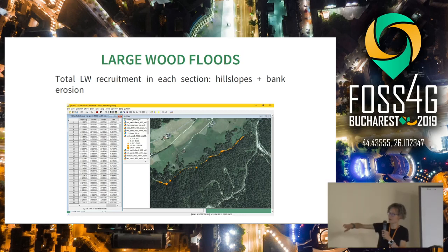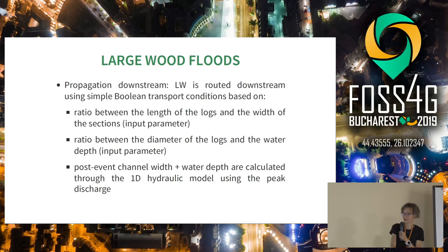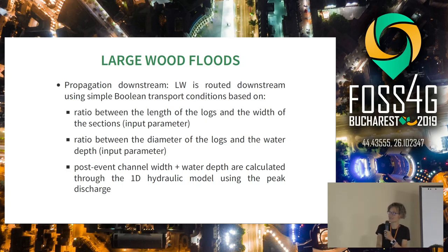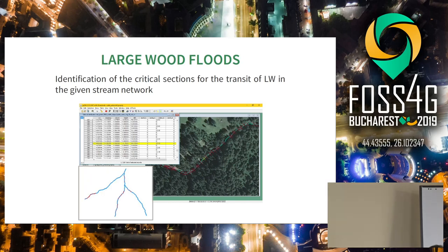This is an example of some contributions in each section of hillslopes and bank erosion. Finally, we perform propagation downstream using a simple Boolean transport condition based on the ratio between the length of the log and the width of the section, and the depth of water — calculated using a hydraulic model integrated in this tool. We can then find the clogging section where logs will be blocked, and also the volumes of logs in each section.